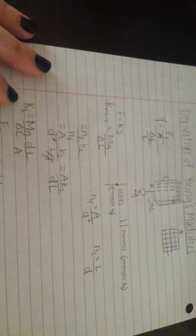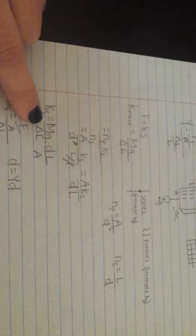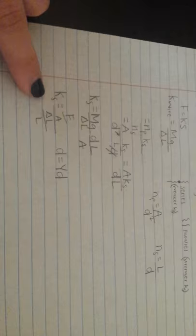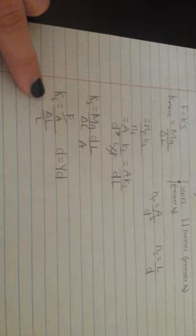And we can set this equal to this, and we'll get Ks equals MG all over change in L times DL times A. And when you convert that back to Young's modulus, which I have written here again, you get D equals YD. And that's the derivation of Young's modulus.